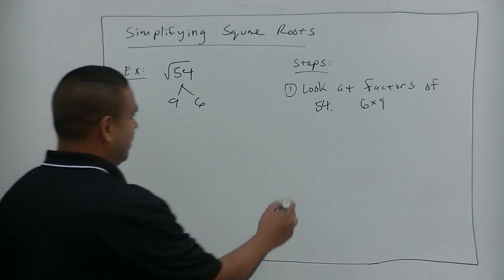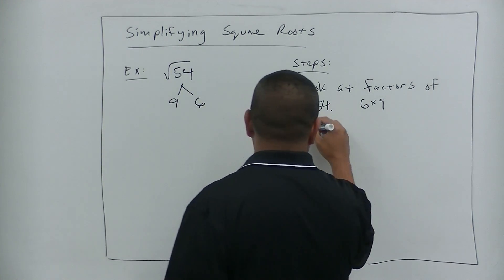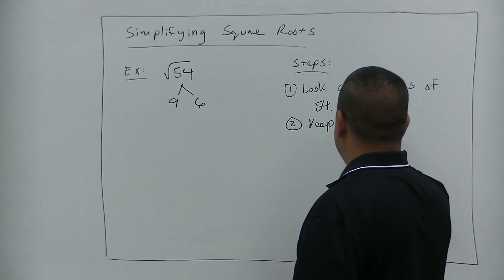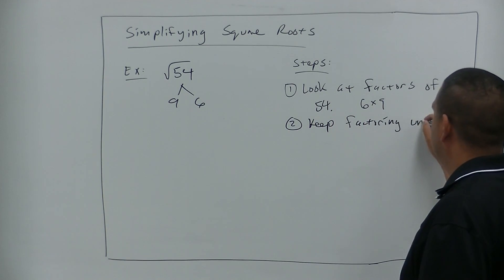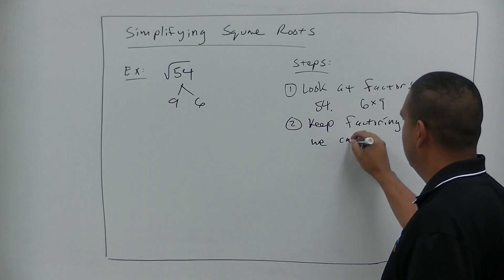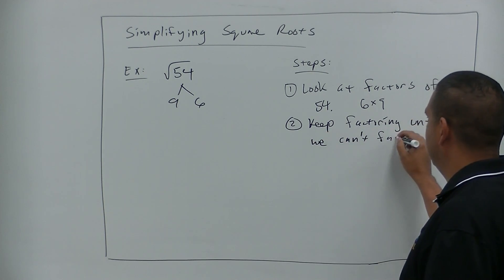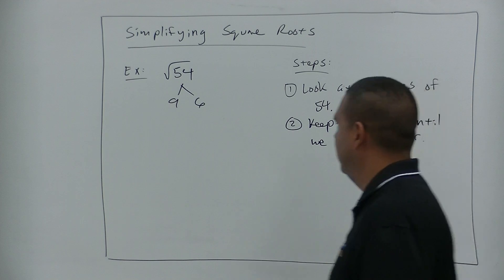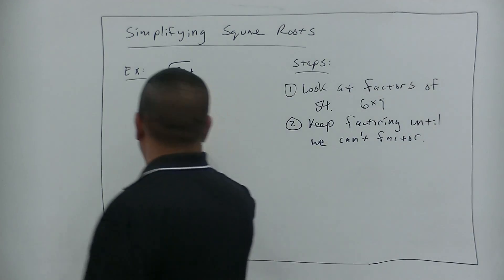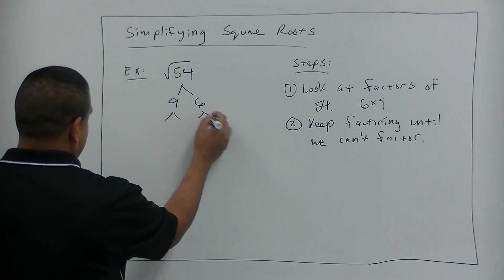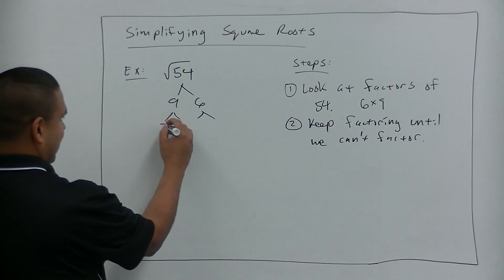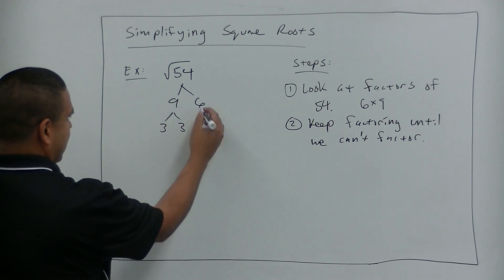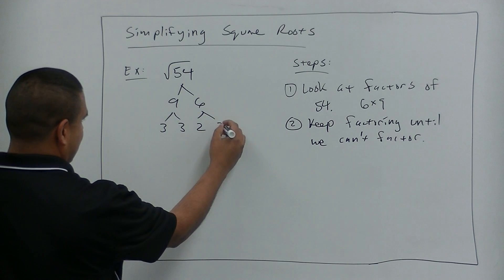Step 2: keep factoring until we can't factor anymore. So 9 and 6 — can we break those down? 9 becomes 3 and 3. 6 becomes 2 and 3.